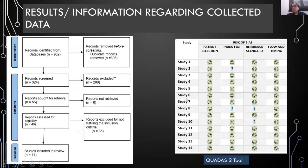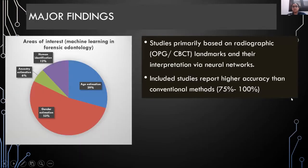The QUADAS-II tool, an online diagnostic test accuracy tool, was used to perform the risk of bias analysis for the 14 studies. Out of the 14 studies, three showed a questionable risk of bias. After discussion amongst the co-authors, these three studies were excluded from the systematic review.